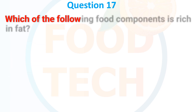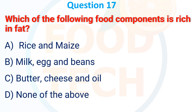Question 17. Which of the following food components is rich in fat? A. Rice and vegetables. B. Milk, eggs and beans. C. Butter, cheese and oil. D. None of the above. The correct answer is C: butter, cheese and oil.